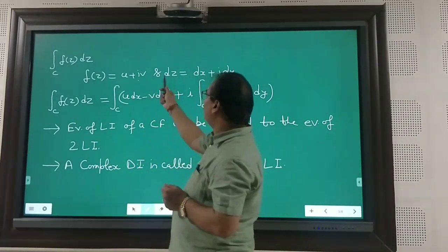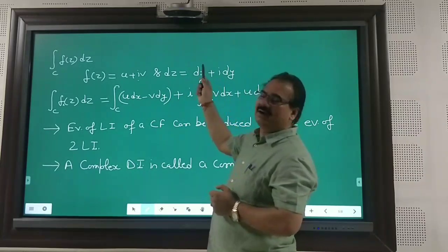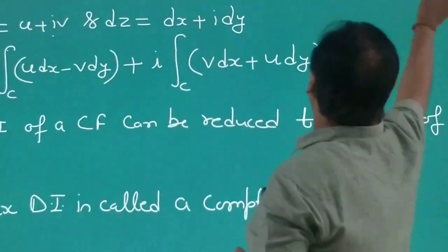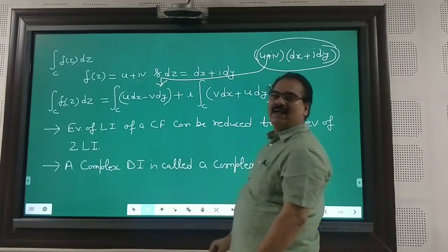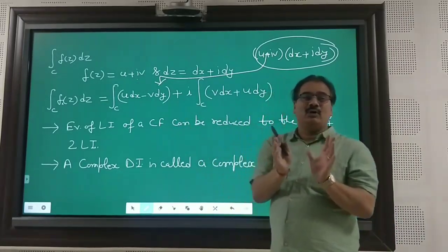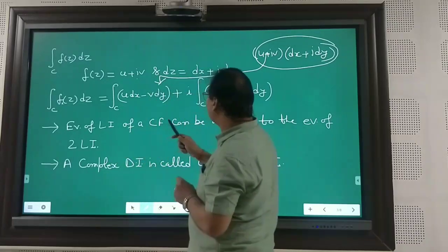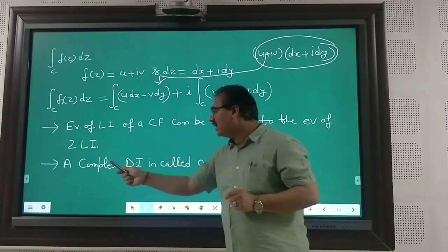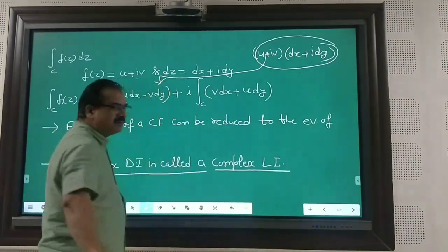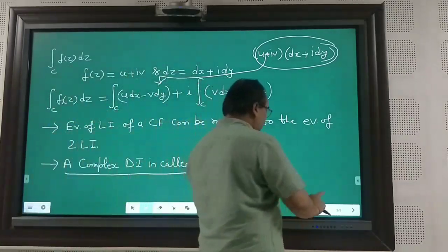Then ∫ f(z)dz may be defined very easily — just multiply f(z) and dz. f(z) is u + iv, and dz is dx + i·dy. If you multiply both terms, u + iv and dx + i·dy, you will get the equation: ∫ f(z)dz = ∫(u dx − v dy) + i·∫(v dx + u dy). This is a very important step from the calculation and numerical point of view, because the evaluation of the line integral of a complex function can be reduced to the evaluation of two real line integrals. A complex definite integral is called a complex line integral — always remember this, and there will be no confusion.